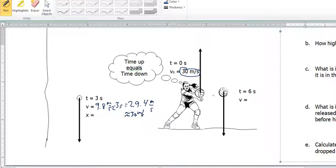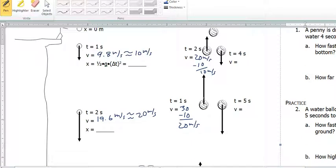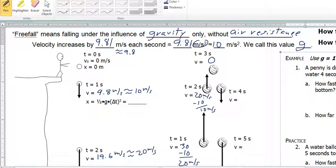But when something is going up, it's going to be losing 10 meters per second every second. So from 30 to 20, from 20 to 10, and from 10 to zero.